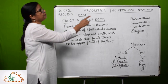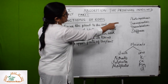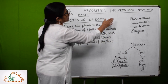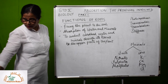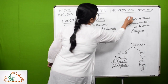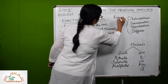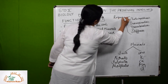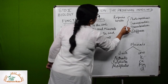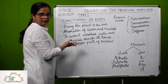Now let us see what processes in the plant require water — why does the plant require water? First, for photosynthesis: photosynthesis cannot happen in the absence of water.